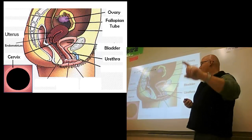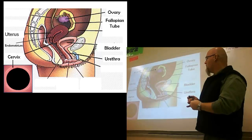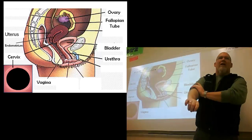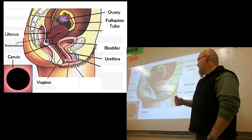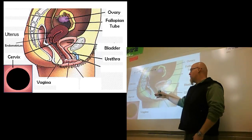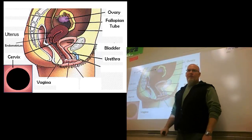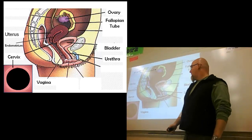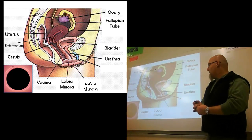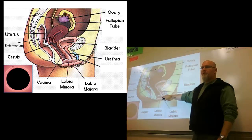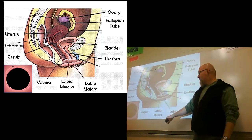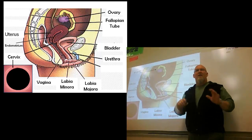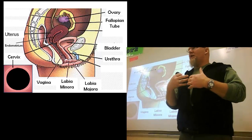Next up, we have the vagina. A lot of times we call this the birth canal once the baby's being born. It's anywhere from four to eight inches in depth. And it's basically a muscular passageway that goes from the outside of the body to the cervix. It's really all it really does. There's not a ton of nerve endings inside there, but there are some. And then that's covered by two folds that we call the labia. And they're broken down into labia majora and labia minora. The minora is in closer. And they basically cover the opening so that you don't get stuff in there that's not supposed to be in there.